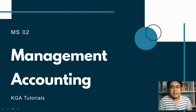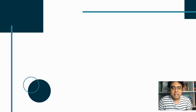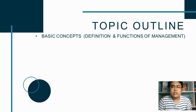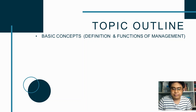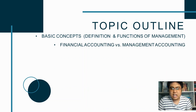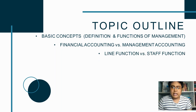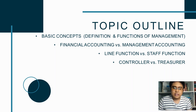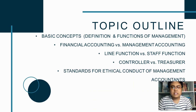Let us discuss management accounting. For this topic, our outline would be: number one, we will discuss the basic concepts — the definition and functions of management. Then we will differentiate financial accounting and management accounting. Next, we will compare a line function against a staff function. We will discuss the functions of a controller compared to the functions of a treasurer. And the last one is the standards for ethical conduct of management accountants.